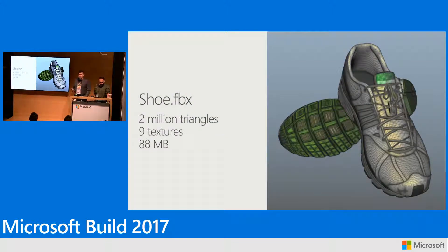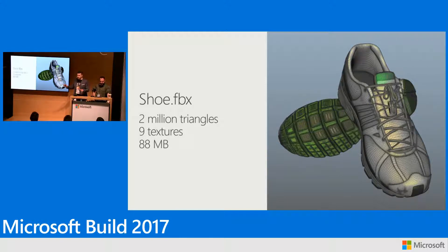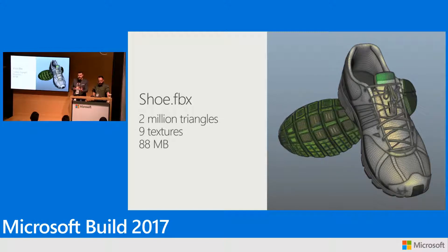We're going to talk about Simplygon Labs, which is a preview product and also a service. Imagine a designer's shoe — Shoe.fbx — with 2 million triangles. A trained eye might see that it's quite dense in terms of triangles. It uses 9 textures, which is a bit of overkill. But as a designer, you don't want to be thinking about number of textures — you just want to design the best shoe you can. It's 88 megabytes, not too bad for a PC. But these stats don't really allow this asset to be visualized effectively on a HoloLens or a mobile device. It needs to be optimized.